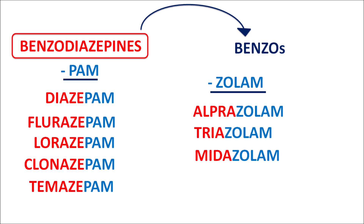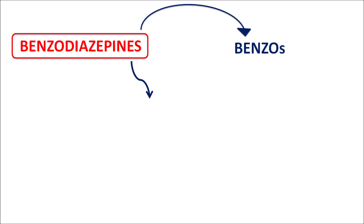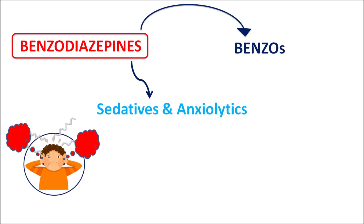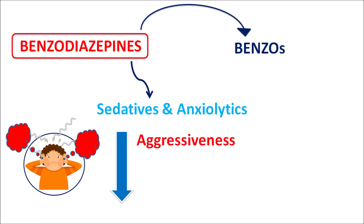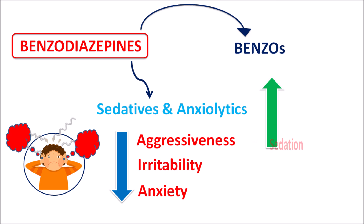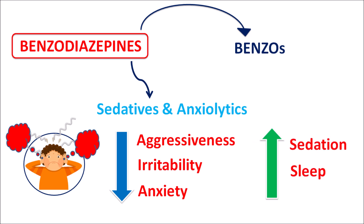The clinical indications of benzodiazepines include use as sedatives, anxiolytics, and hypnotics — they can induce sleep. These drugs are particularly prescribed for patients with anxiety, where benzos reduce aggressiveness, irritability, and anxiety. At the same time, they increase sedation and induce sleep, acting as hypnotics that improve sleep quality. That's why benzodiazepines are called minor tranquilizers.